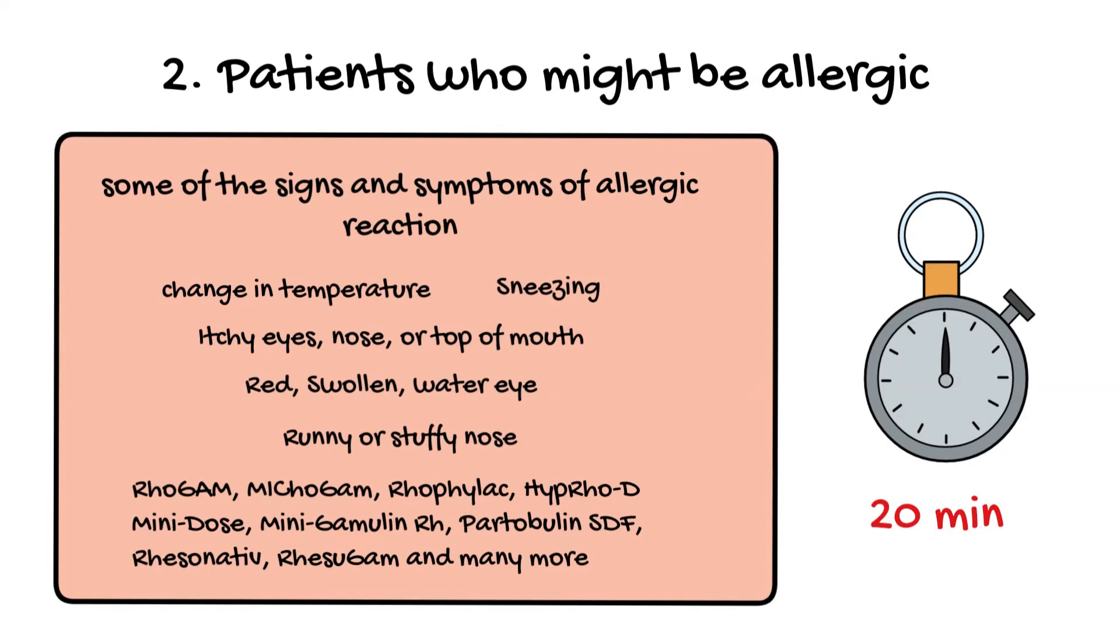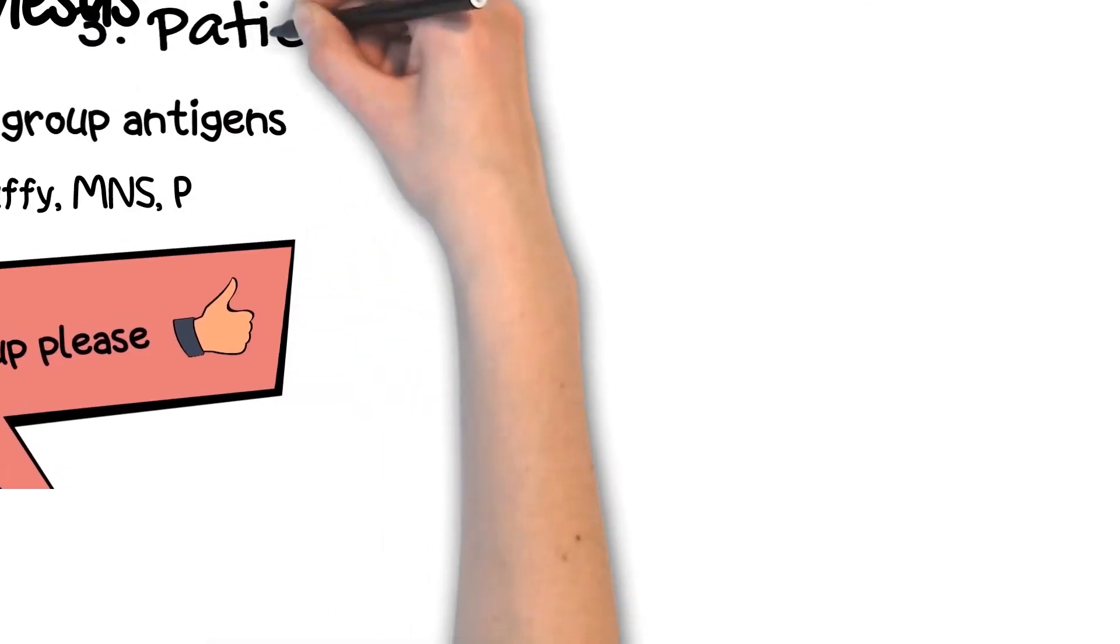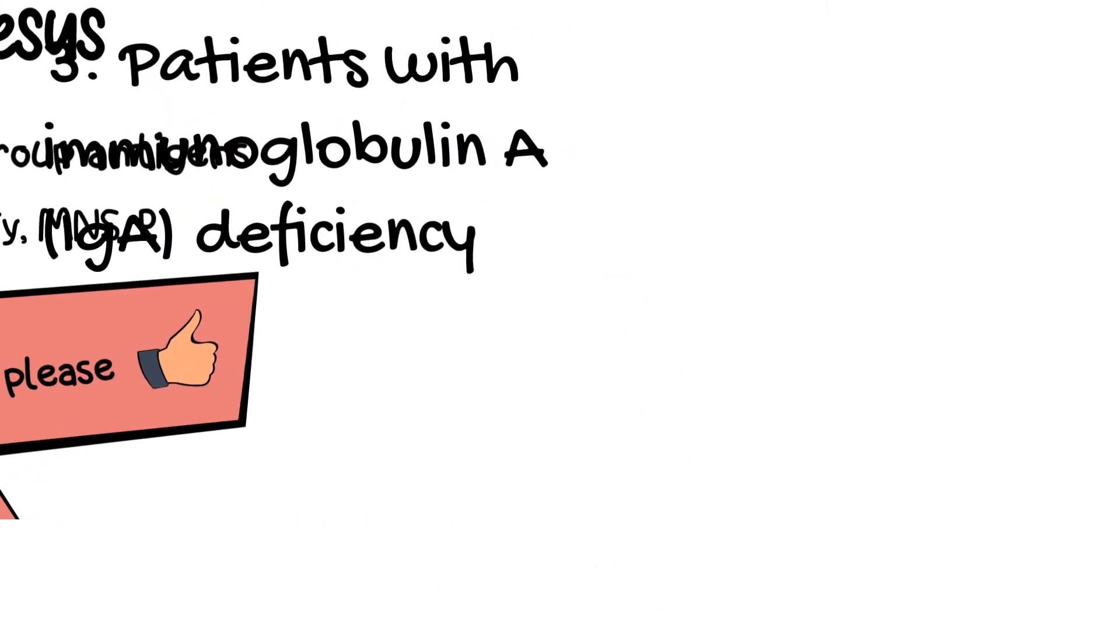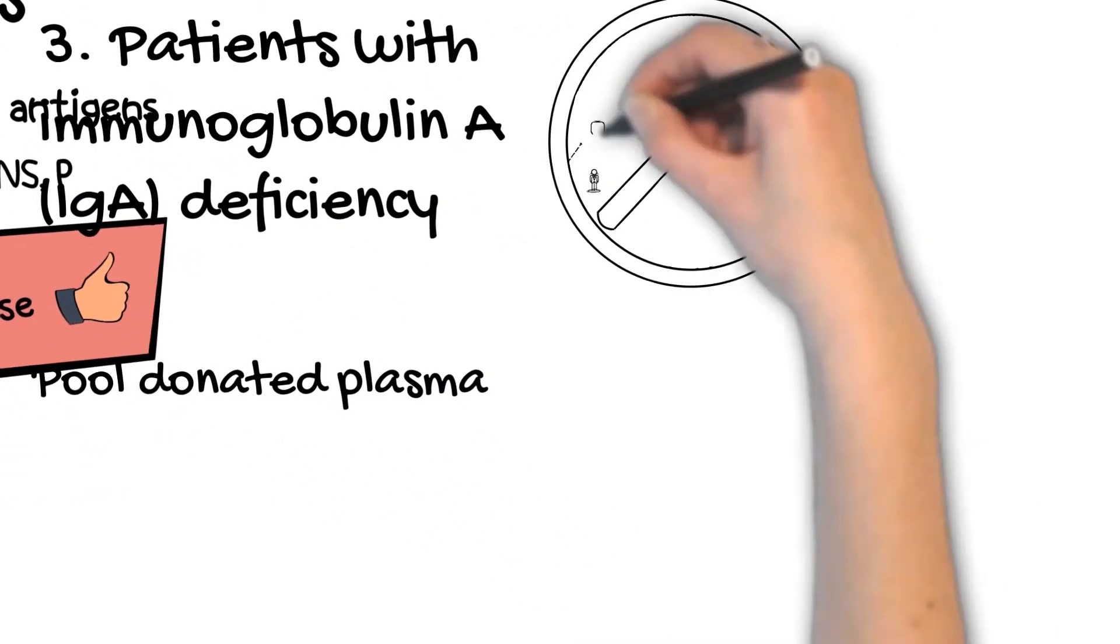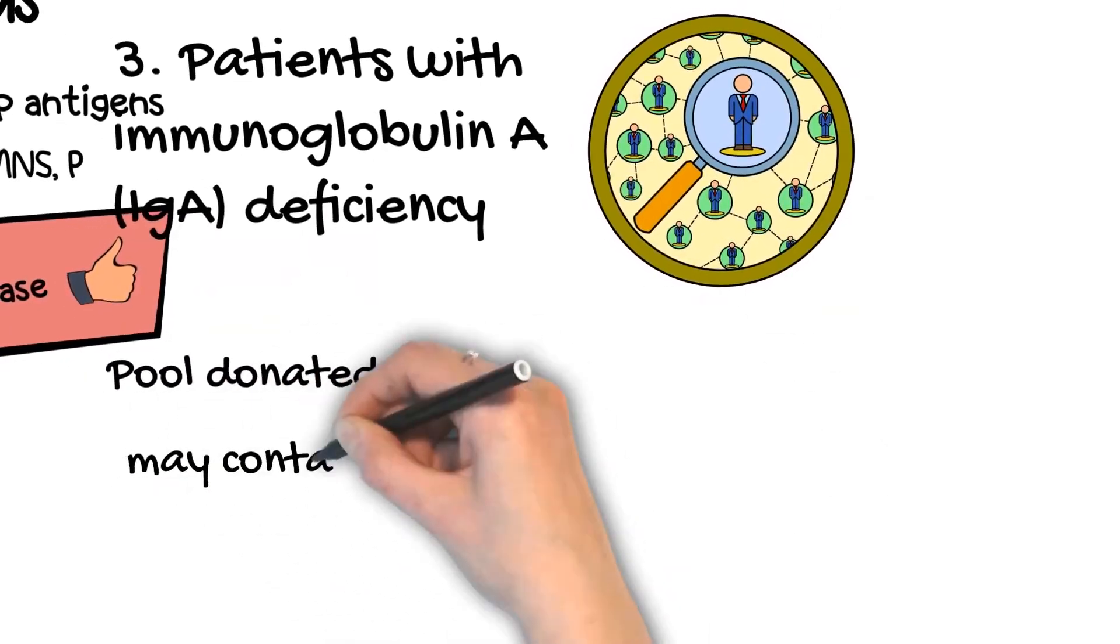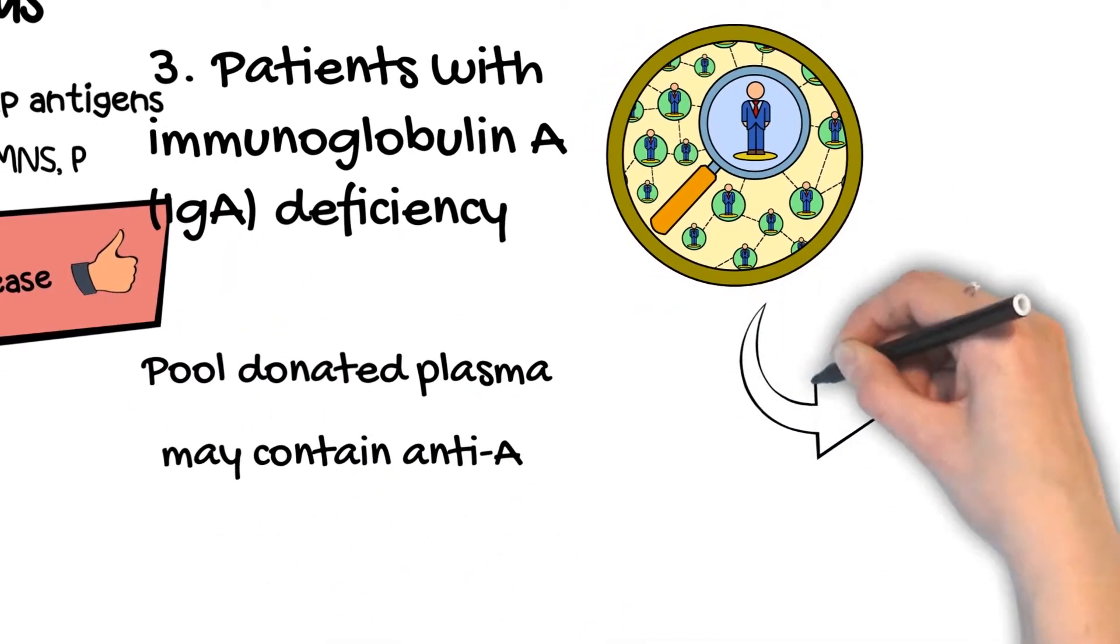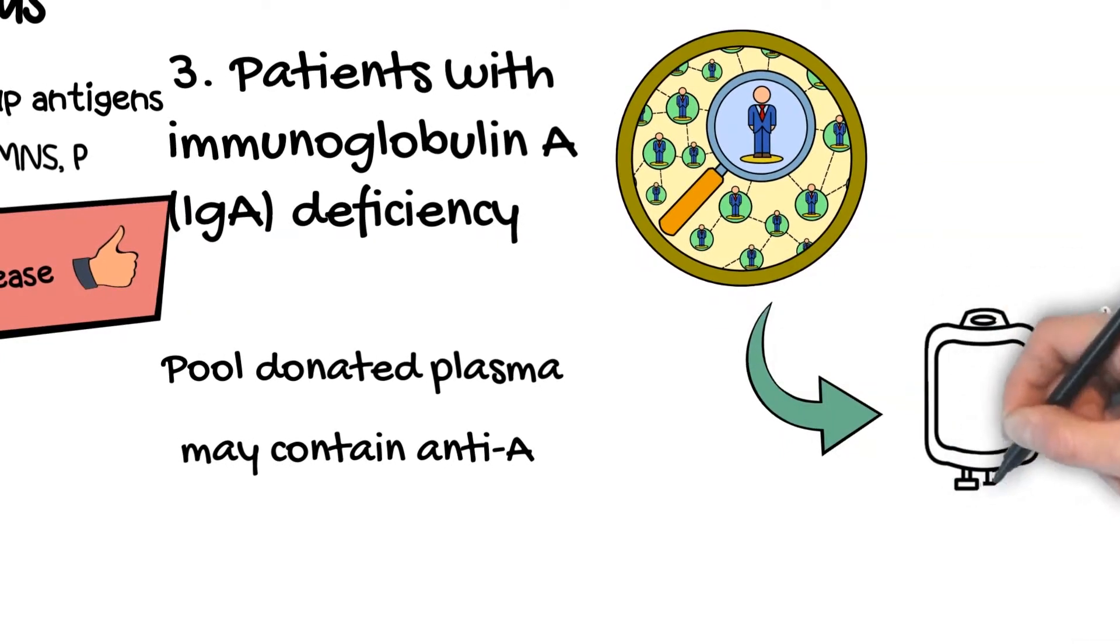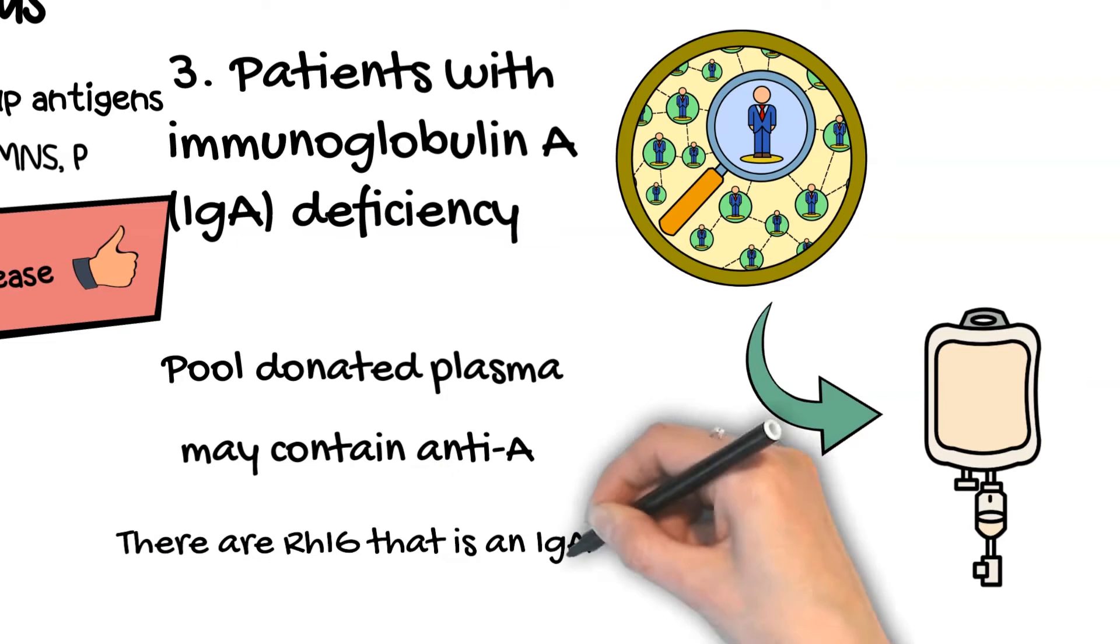RHIG comes from donated plasma. It can contain a small amount of IgA and can cause allergic reaction in patients with IgA deficiency. There are different processing types of RHIG and some may be suitable for people with IgA deficiency. So please consult your doctor in choosing the right RHIG for you.